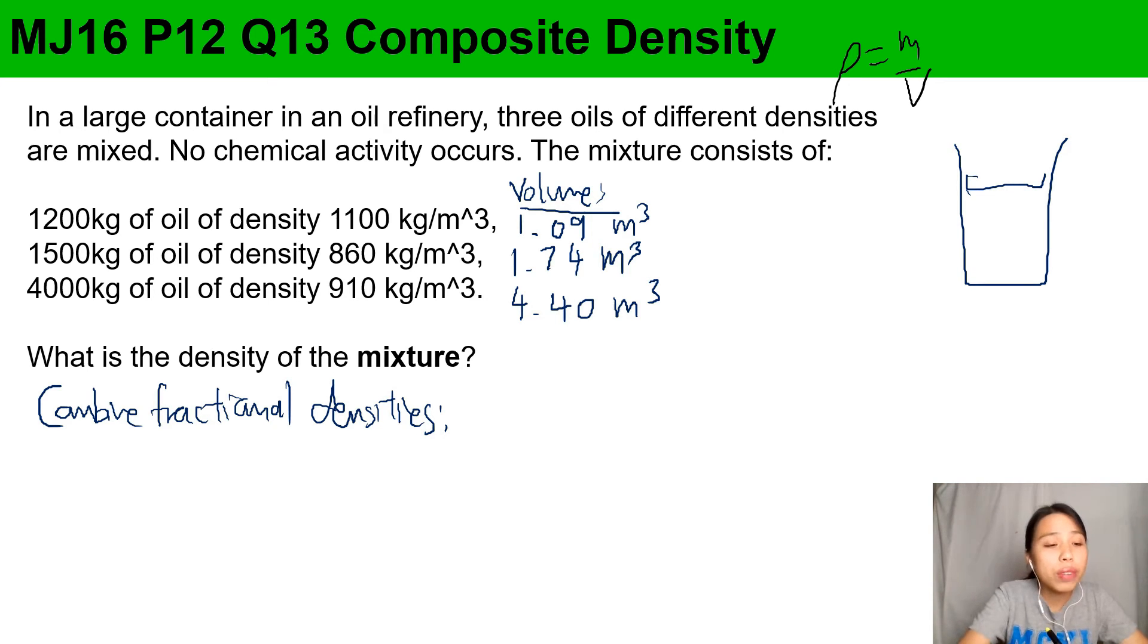That's the volume of each oil in the container. What is the volume of the whole container? You can do a rough estimate: 1.09 + 1.74 + 4.4 - it's roughly about 7.23 meters cubed. If I want to find the fractional density, I can do that by saying 1.09 over the total volume 7.23 times its density. If you want to do percentage, 1.09 over 7.23 is roughly 15 percent, so this first oil contribution is roughly 15 percent.